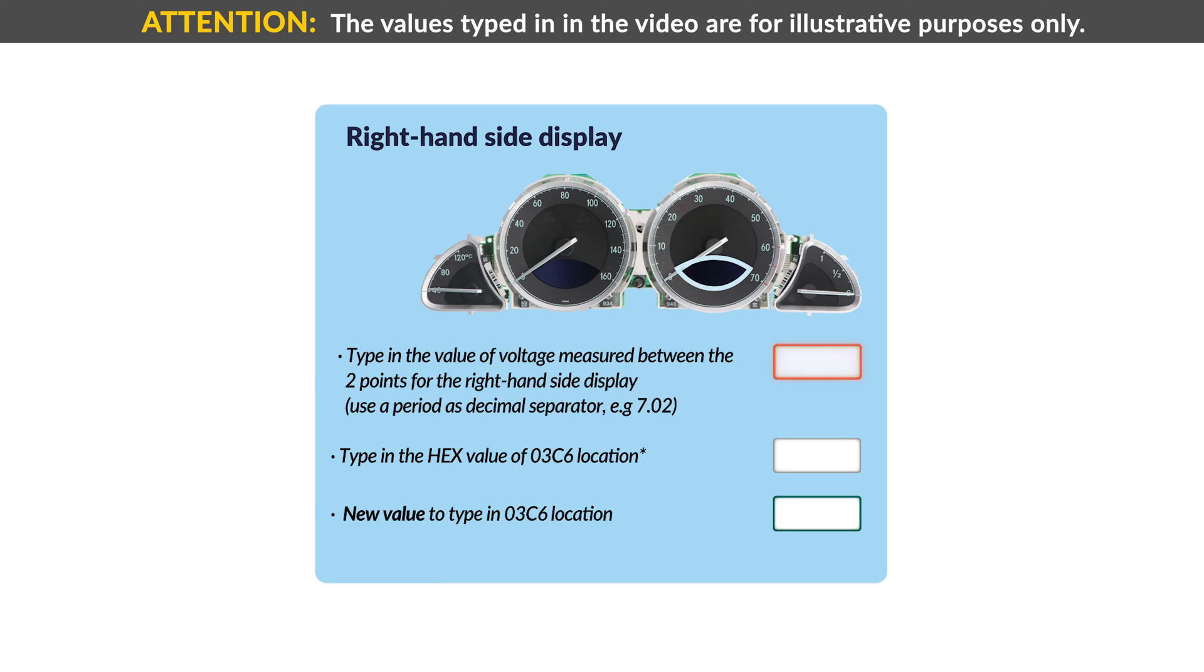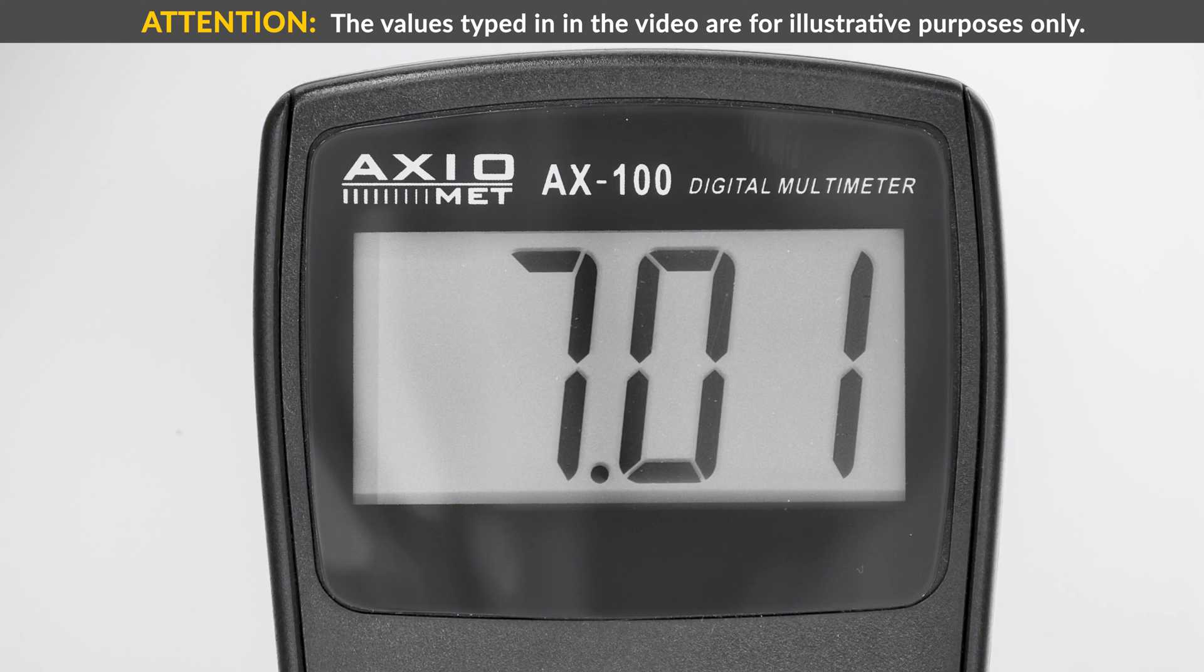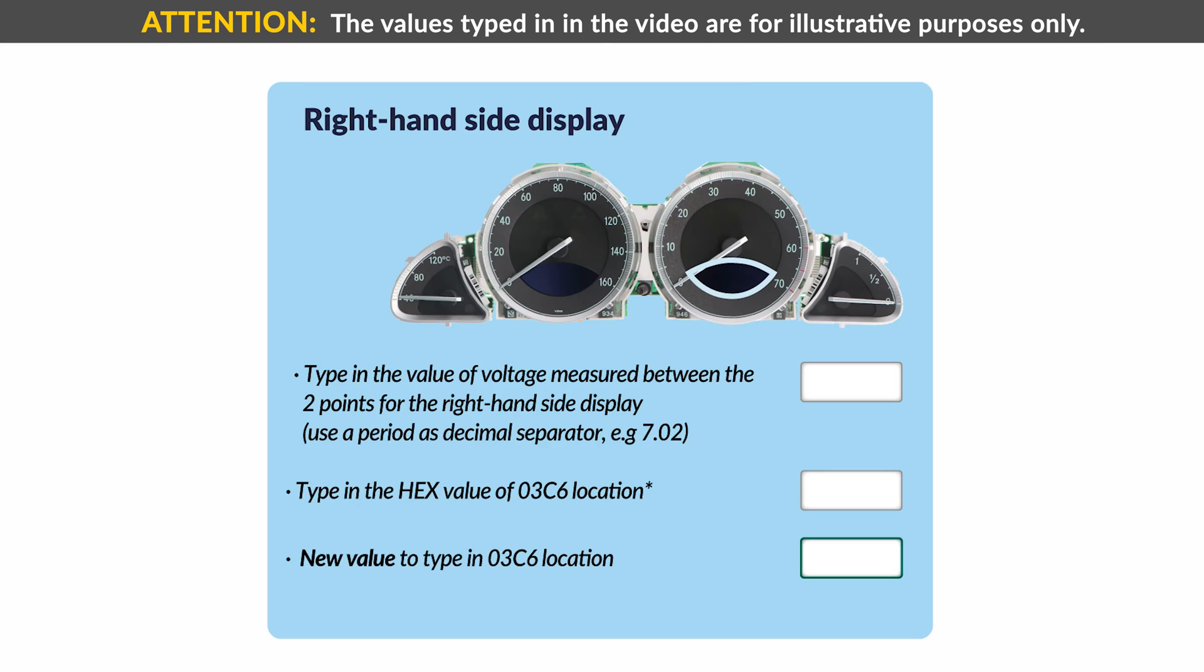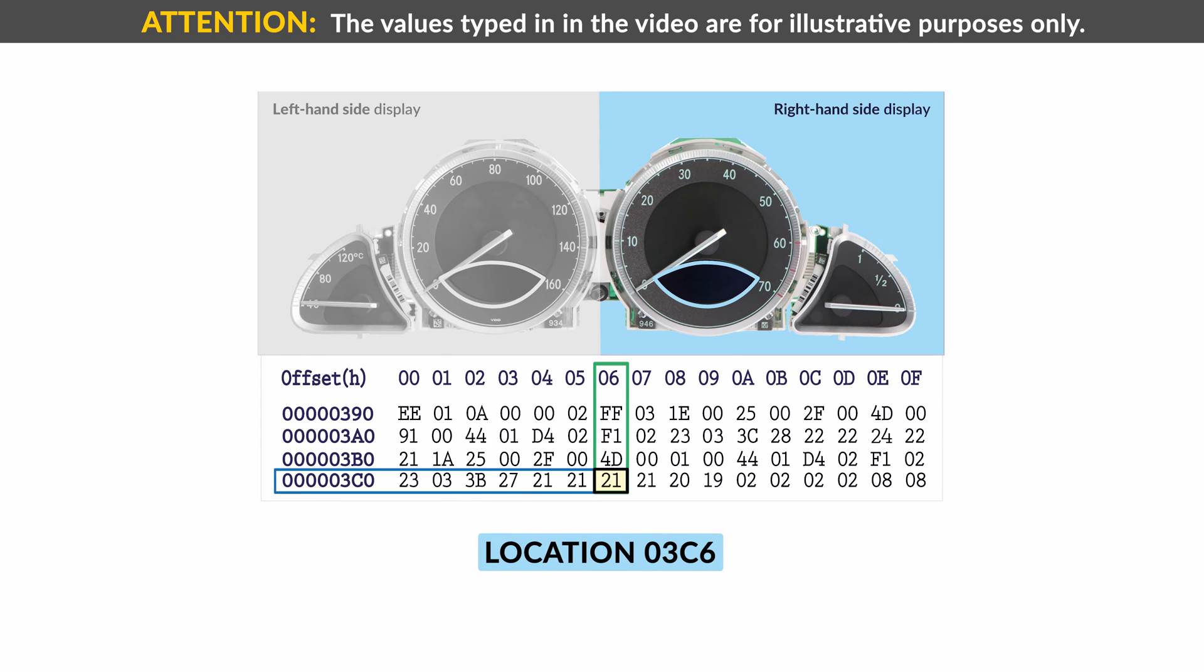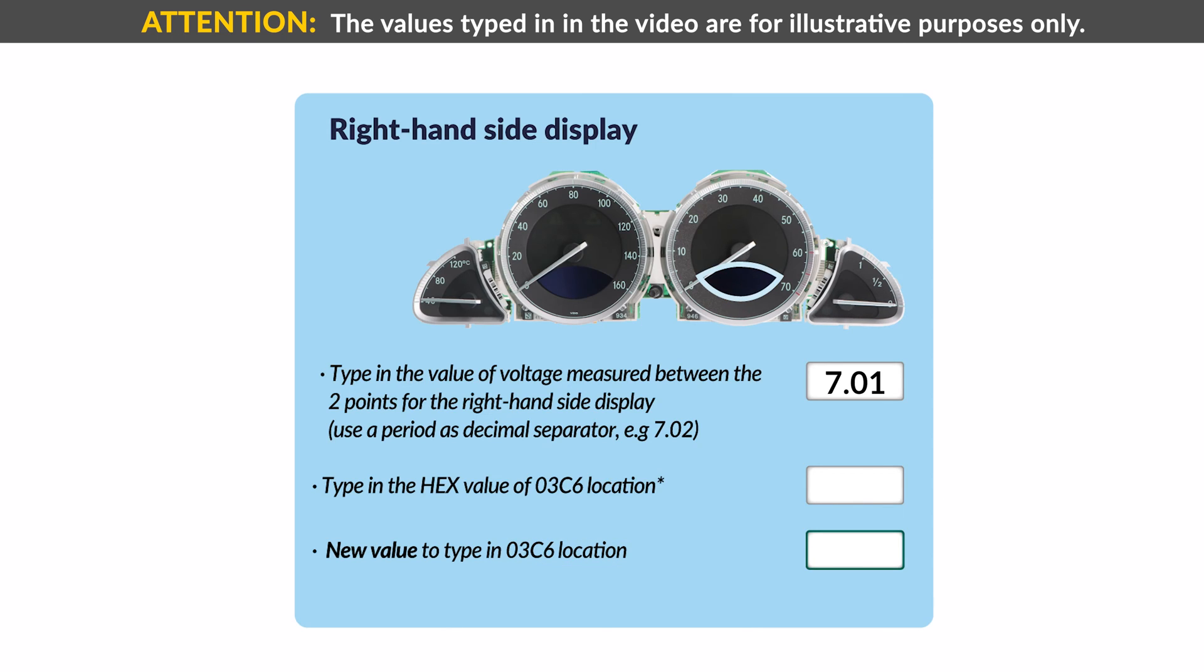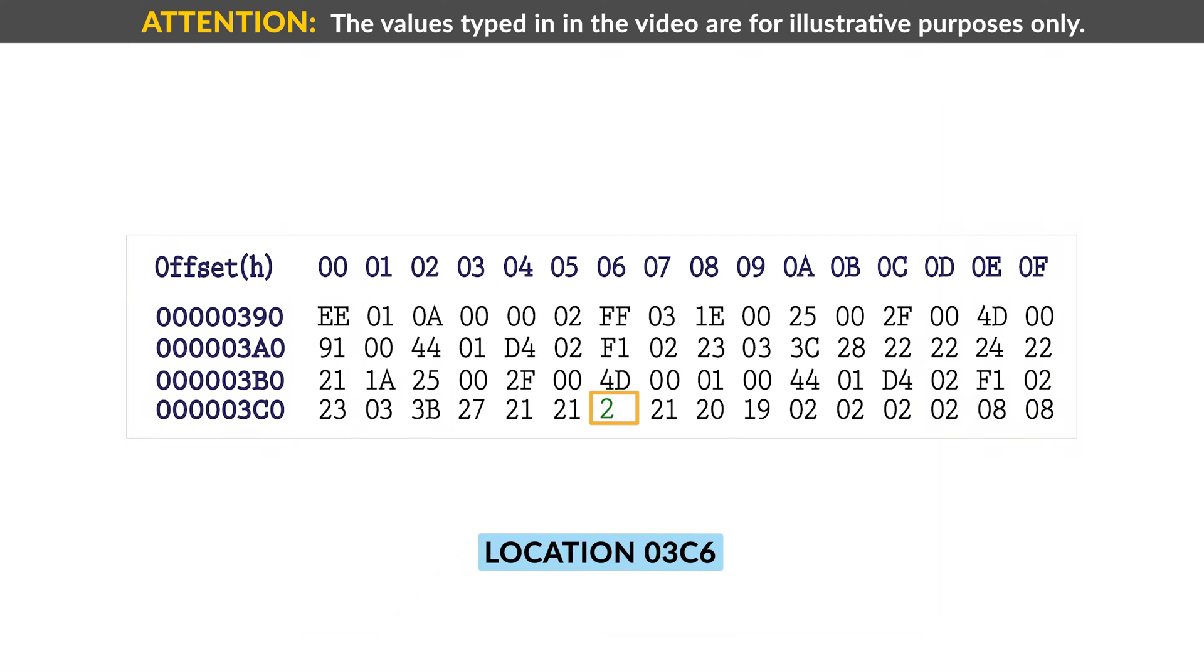Repeat the operation for the right-hand side display, typing in first the voltage measured, in this case 7.01V. Then, the 03C6 location value, in this case 21. The new value to type in in the location will be 25.